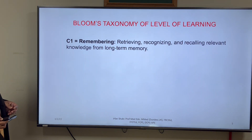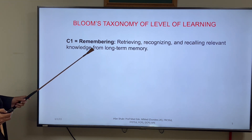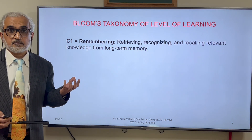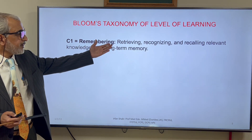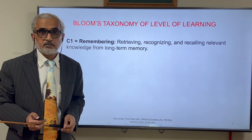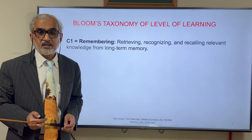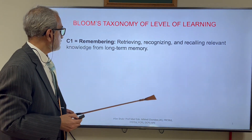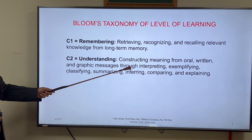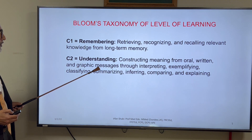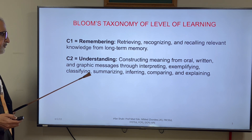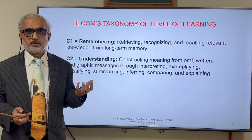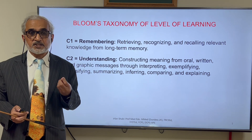In Bloom's taxonomy, C1 is remembering — retrieving, recognizing, and recalling relevant knowledge from long-term memory. You can retrieve it, recognize something, and recall it. This can be done if there is rote memorization of some information. C2 is understanding — constructing meanings from oral, written, or graphic messages through interpreting, exemplifying, classifying, summarizing, inferring, comparing, and explaining. If somebody has information and can comprehend it, that is a C2 level.